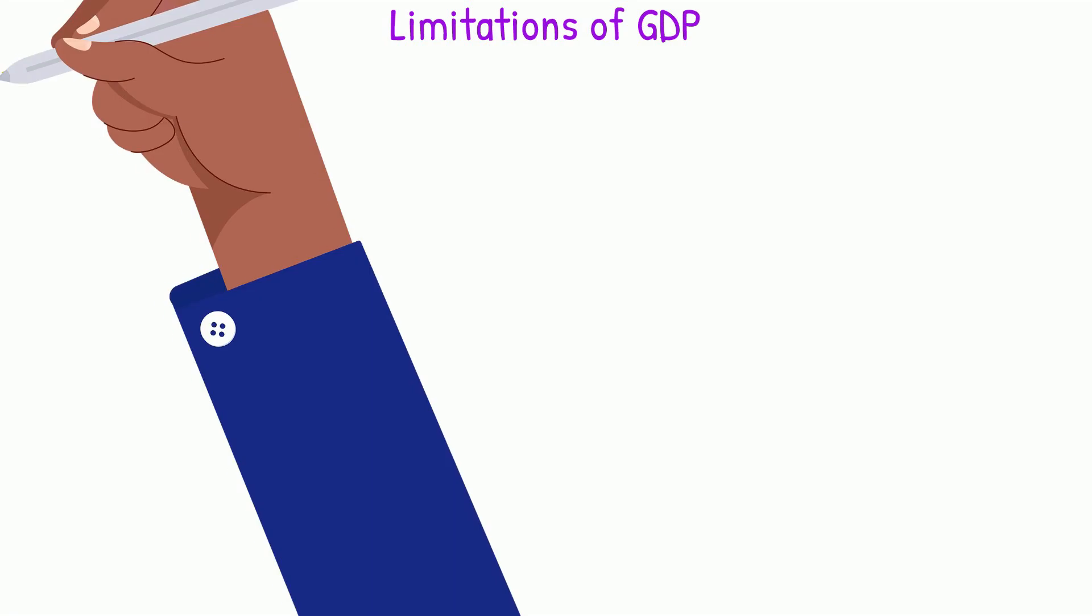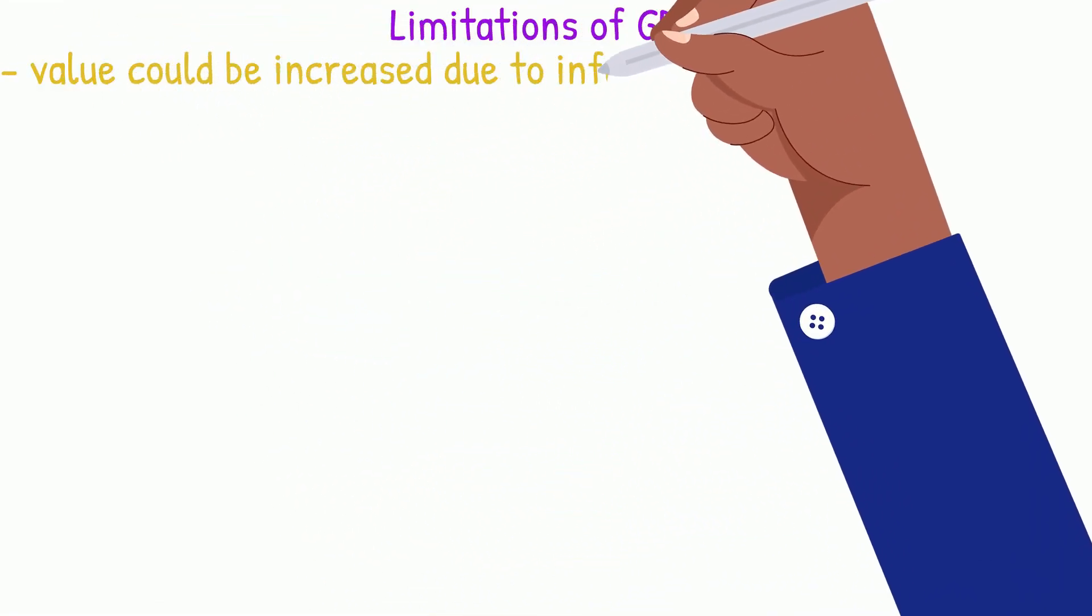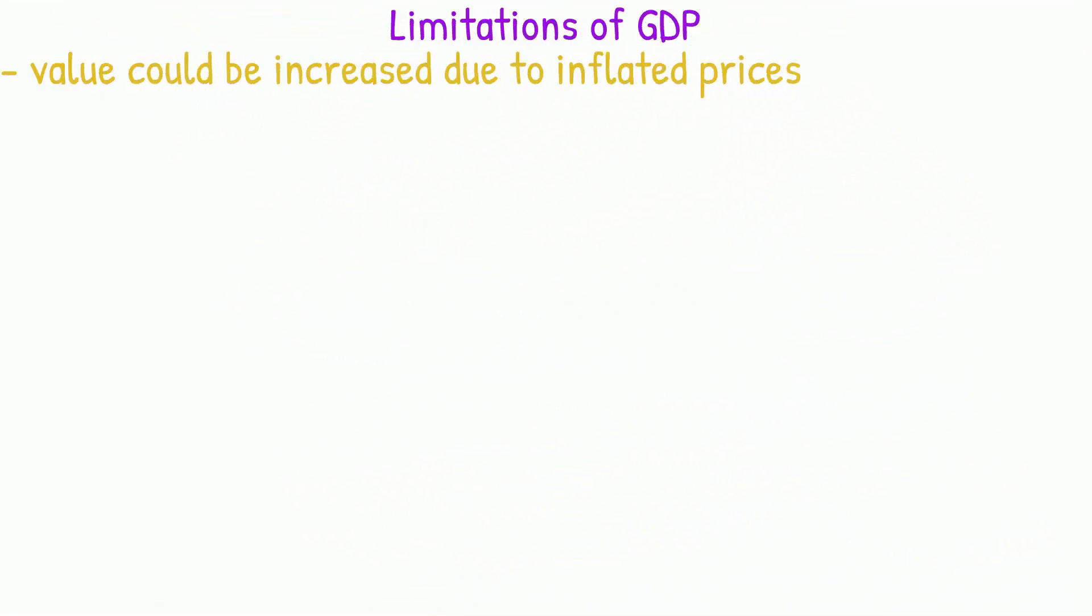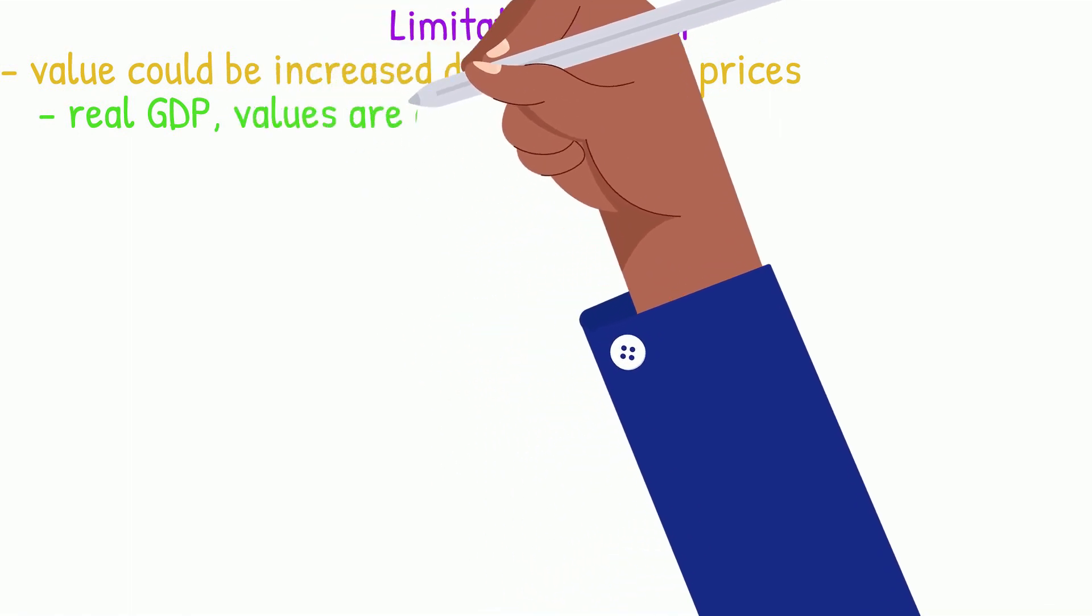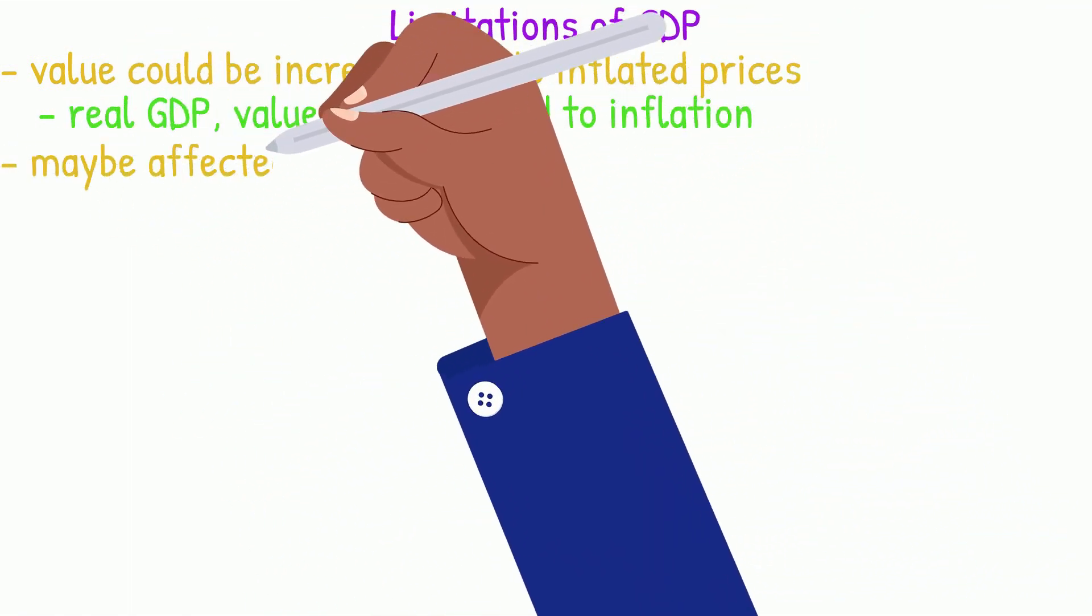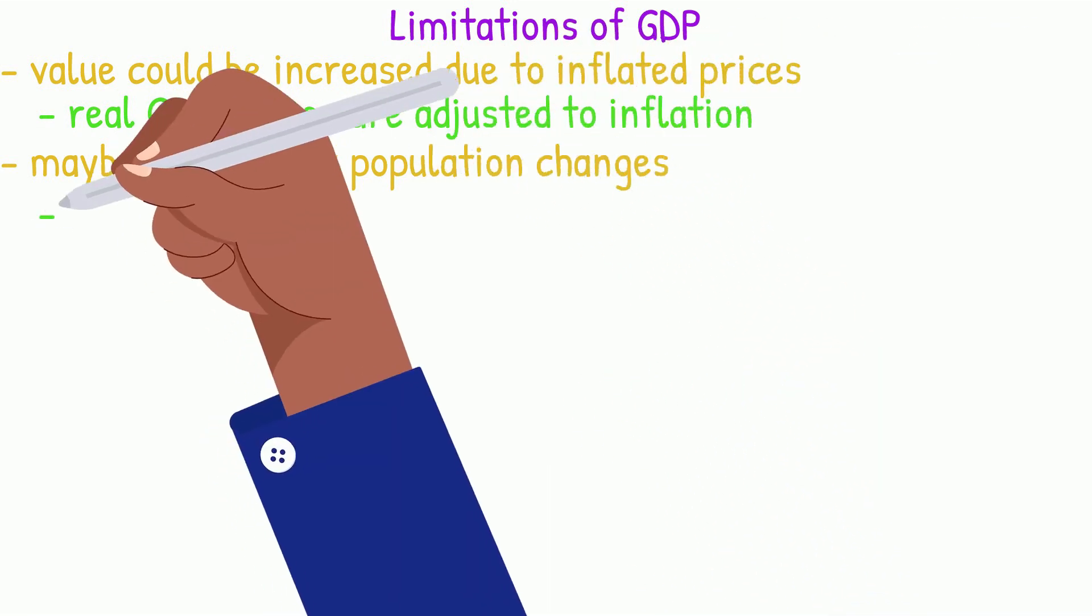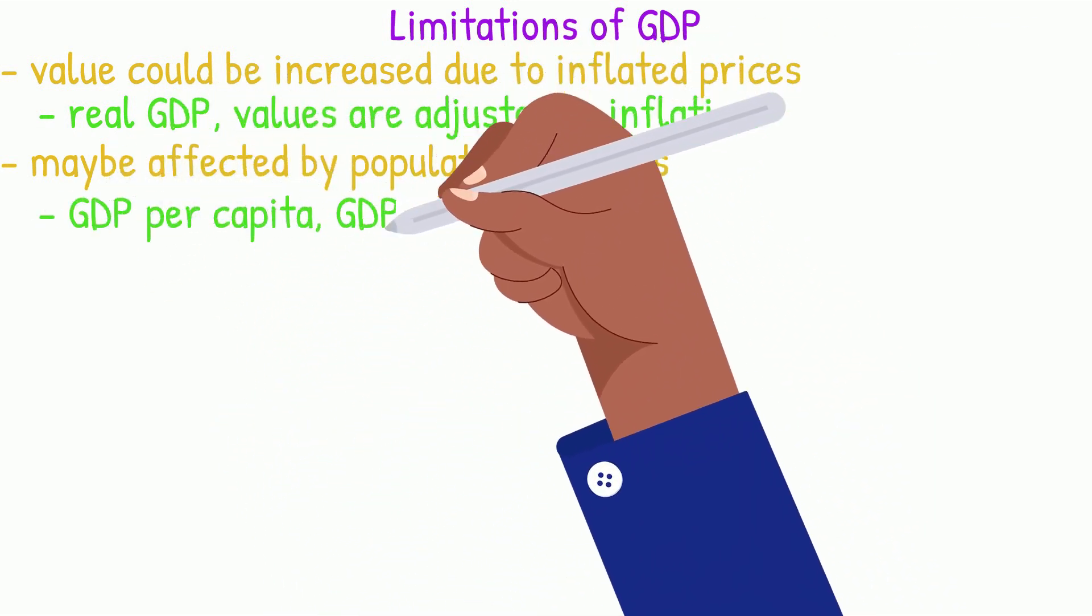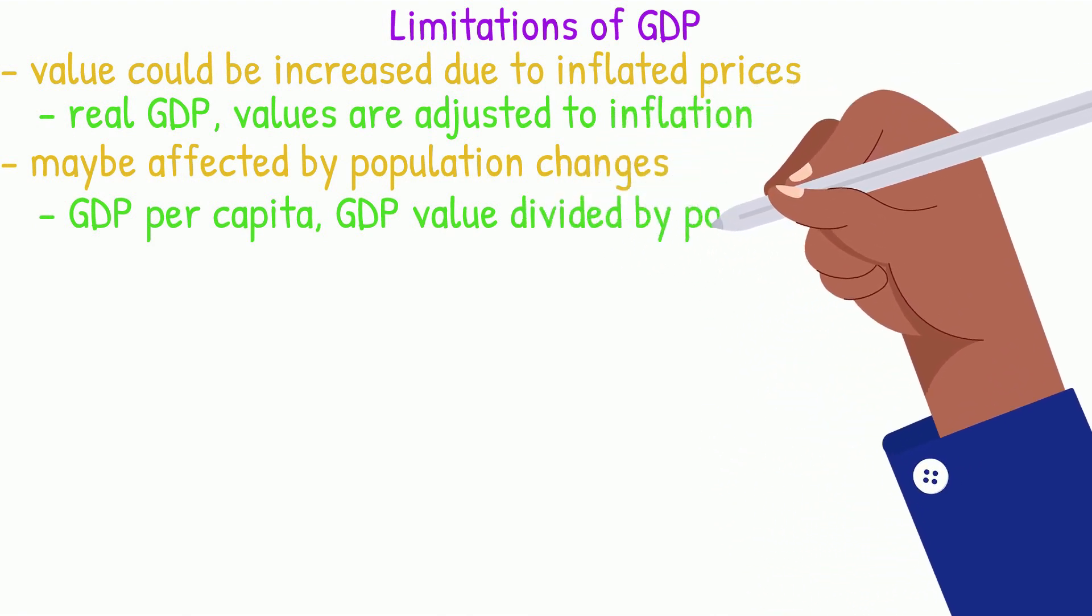However, there are some limitations to using GDP to measure economic growth. GDP value could be increased due to inflated prices. A solution to this would be using real GDP, where the values are adjusted to inflation. GDP may be affected by population changes. A solution to this would be using GDP per capita, where the GDP value is divided by population.